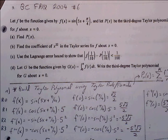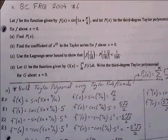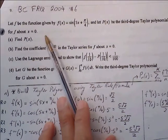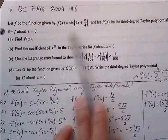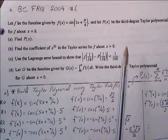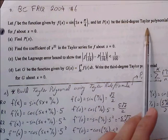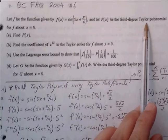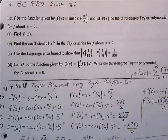We're continuing with the BC Taylor series review worksheet number 2, problem number 9. Let f be the function given by f(x) = sine of 5x plus pi over 4. Let p(x) be the third degree Taylor polynomial for f about x equals 0. Find p(x).